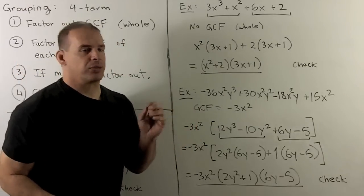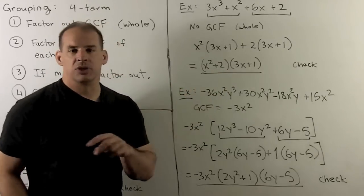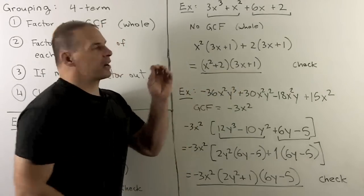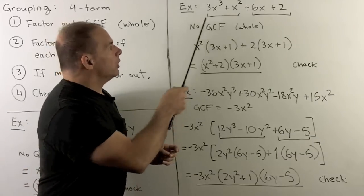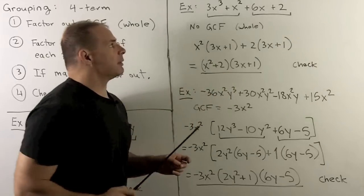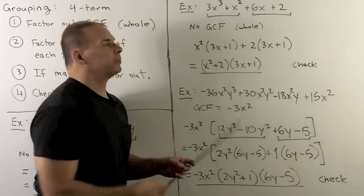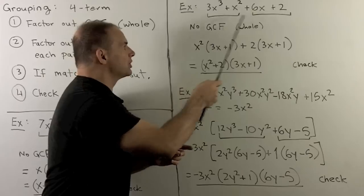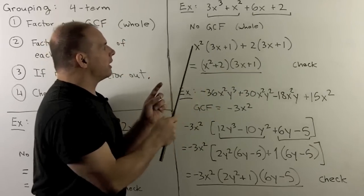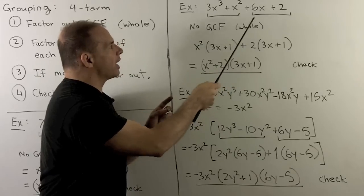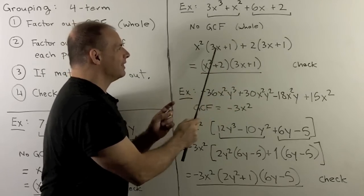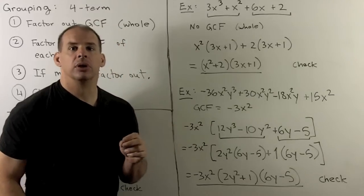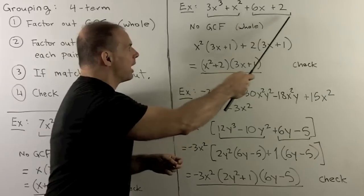Another example: 3x³ + x² + 6x + 2. Exponents are already in descending order. Checking for a GCF: no y in the last term, and numbers 3, 1, 6, 2 have no common factor, so no GCF. Going to pairs — first pair: factor out x², leaving 3x + 1. Second pair: factor out 2, leaving 3x + 1. These match, so we factor to get (x² + 2)(3x + 1). Multiply to check.